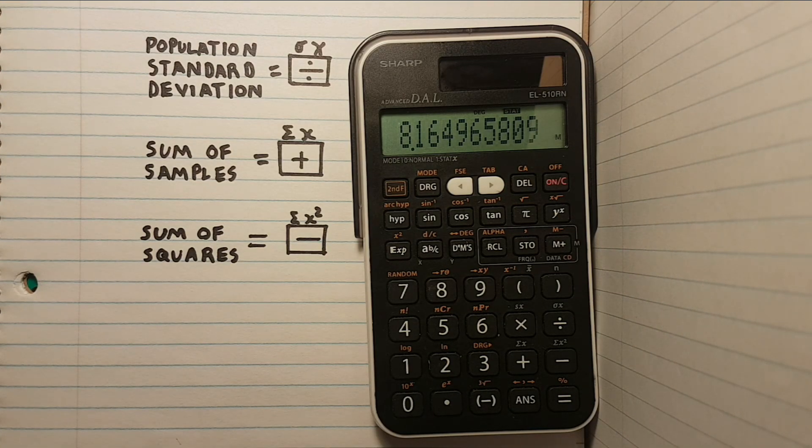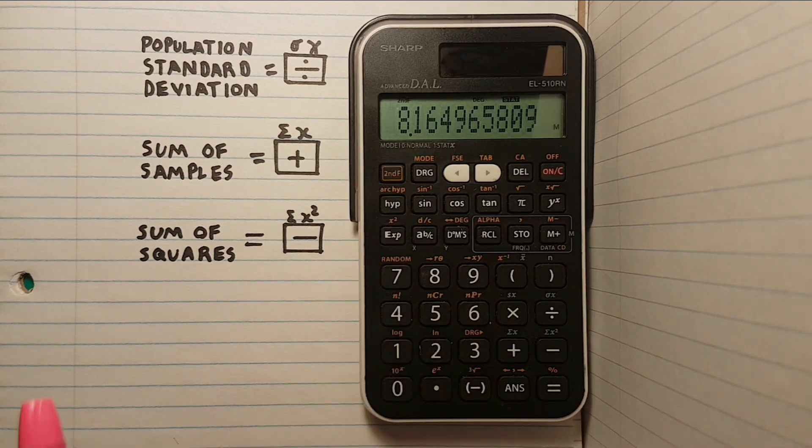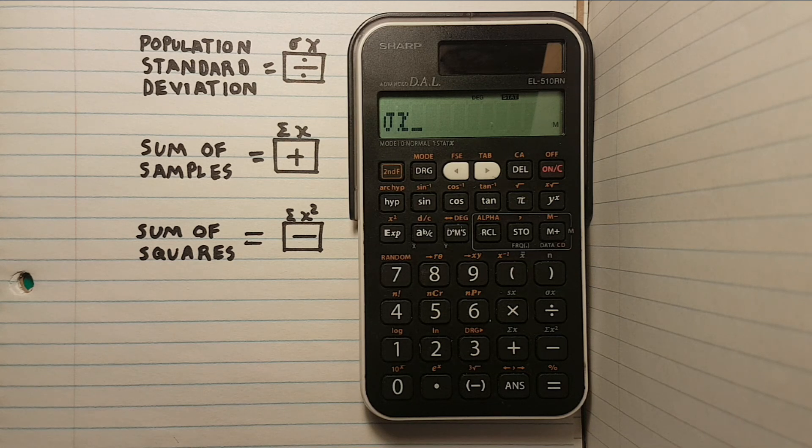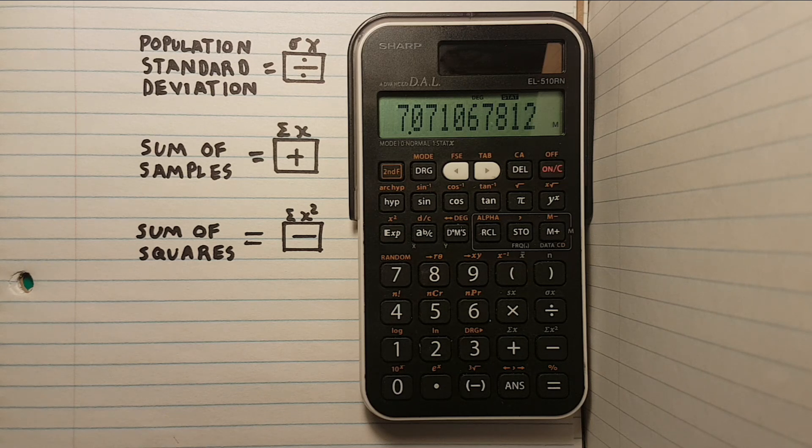Okay, now let's find the population standard deviation. To do this, we press the second function key followed by the RCL key and then divide, which has the small sigma X above it. We will now see a sigma X on our screen and if we press equals, we get 7.071, which is the population standard deviation.